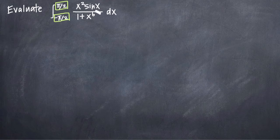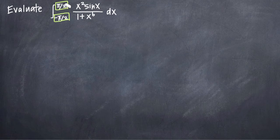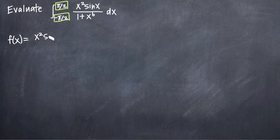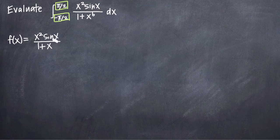If the function is even, you'll still be able to simplify it before you actually evaluate the integral. Because we have negative a to positive a for our range, let's go ahead and check whether we have a function that's even or odd. We'll call the function f of x, where f of x equals x squared sine x all divided by the quantity 1 plus x to the sixth.